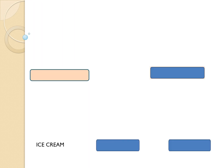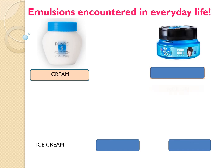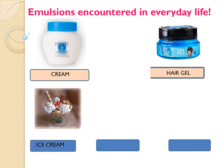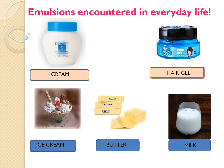Here are some emulsions encountered in everyday life: sunscreen, hair gel, ice cream, and butter — all examples where both dispersed phase and dispersion medium are liquid. I hope things are clear to you. Thank you so much. Keep learning, stay safe, and stay healthy.